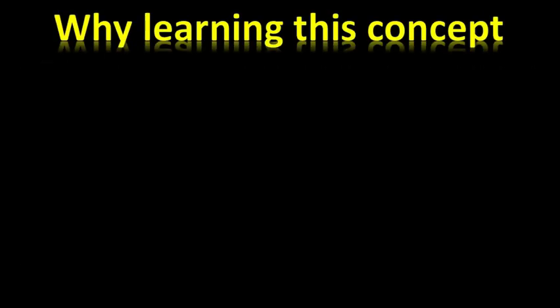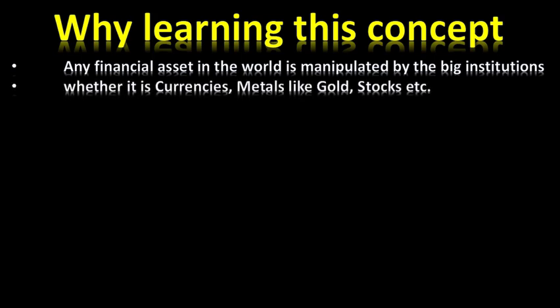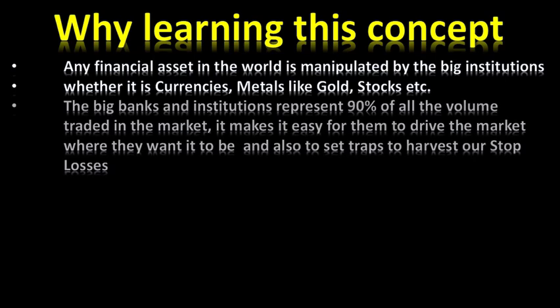Why learn this concept? Any financial asset in the world is manipulated by big institutions, whether it is currencies, metals like gold, stocks, etc. The big banks and institutions represent 90% of all the volume traded in the market, making it easy for them to drive the market where they want and to set traps to harvest our stop losses.